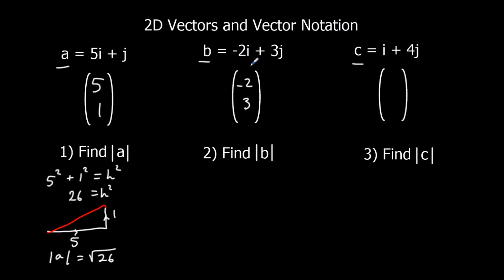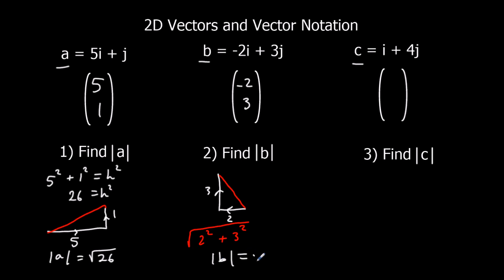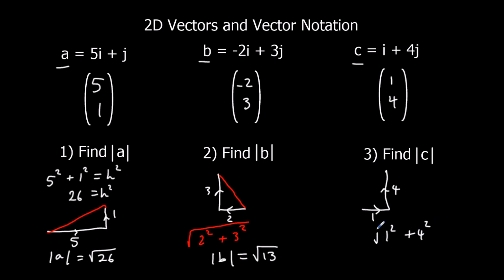Same for the second one: we've got back 2, up 3. How long is that line? We do 2 squared plus 3 squared, square root the answer, and that gives mod B equals root 13. And the same for C: along 1, up 4. We've got 1 squared plus 4 squared, square rooted, which is root 17.